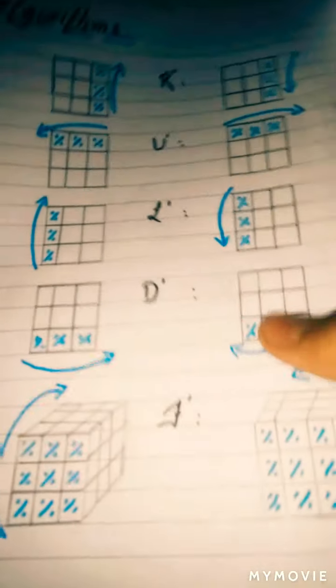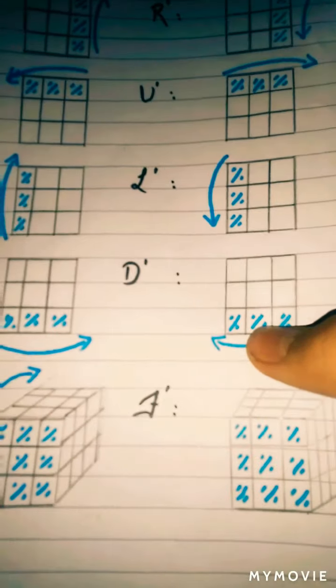Now D prime — D and D prime, the down layer moves to the left.